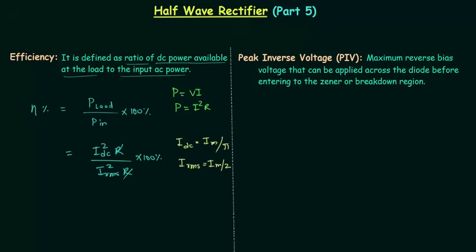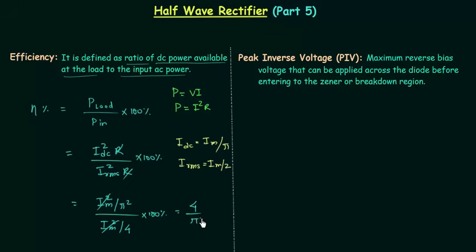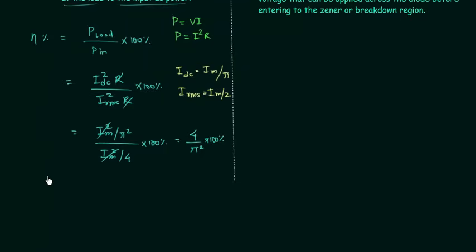So we have Im squared divided by pi squared, divided by Im squared divided by 4. We can cancel out the two Im squares and we are left with 4 divided by pi squared. When you solve this, you will have efficiency equal to 40.56%, which is very low.